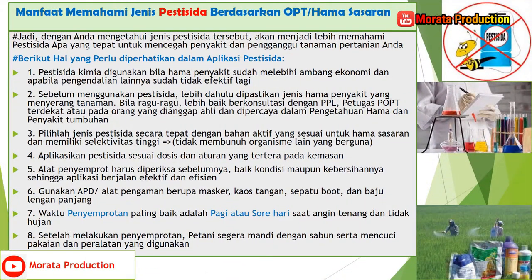Manfaat memahami jenis pestisida berdasarkan OPT pertanian atau hama sasaran. Dengan mengetahui jenis pestisida tersebut, Anda akan lebih memahami pestisida apa yang tepat untuk mencegah penyakit dan pengganggu tanaman pertanian Anda. Berikut hal yang perlu diperhatikan dalam aplikasi pestisida: yang pertama, pestisida kimia digunakan bila hama penyakit sudah melebihi ambang ekonomi dan apabila pengendalian lainnya sudah tidak efektif lagi.